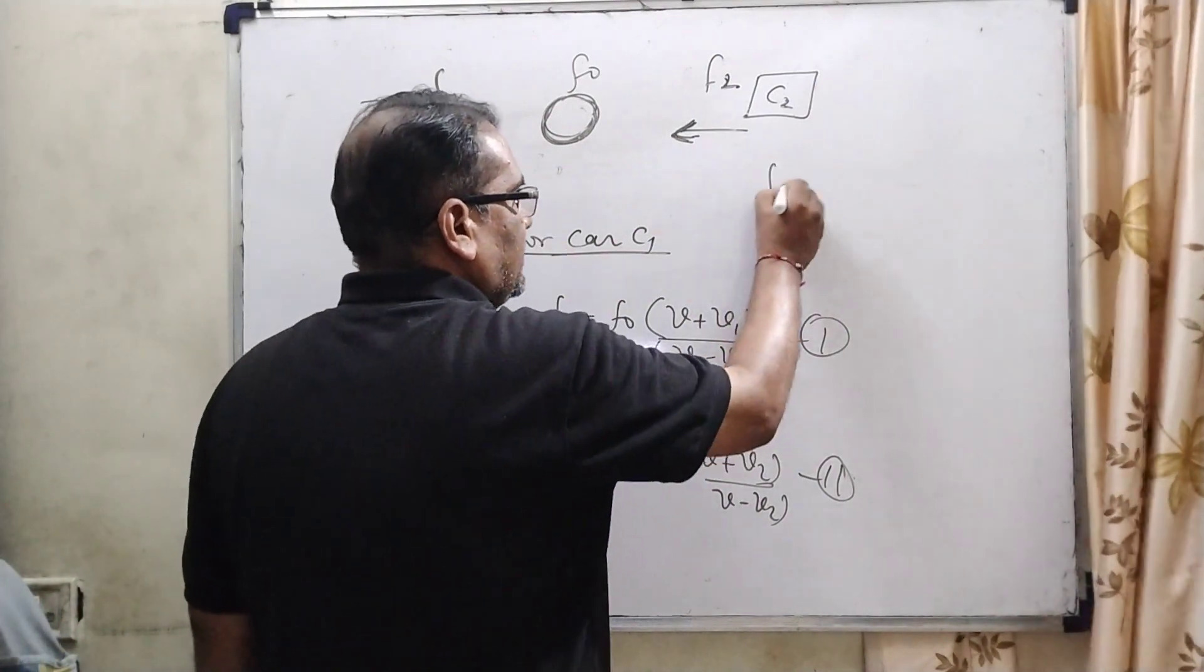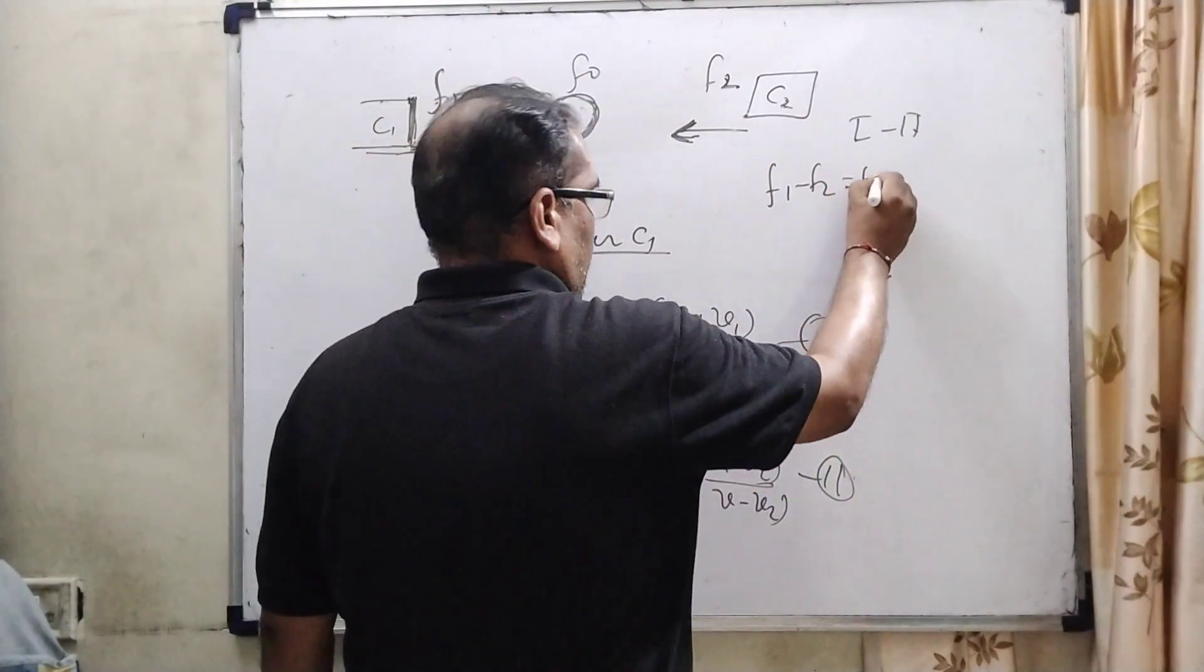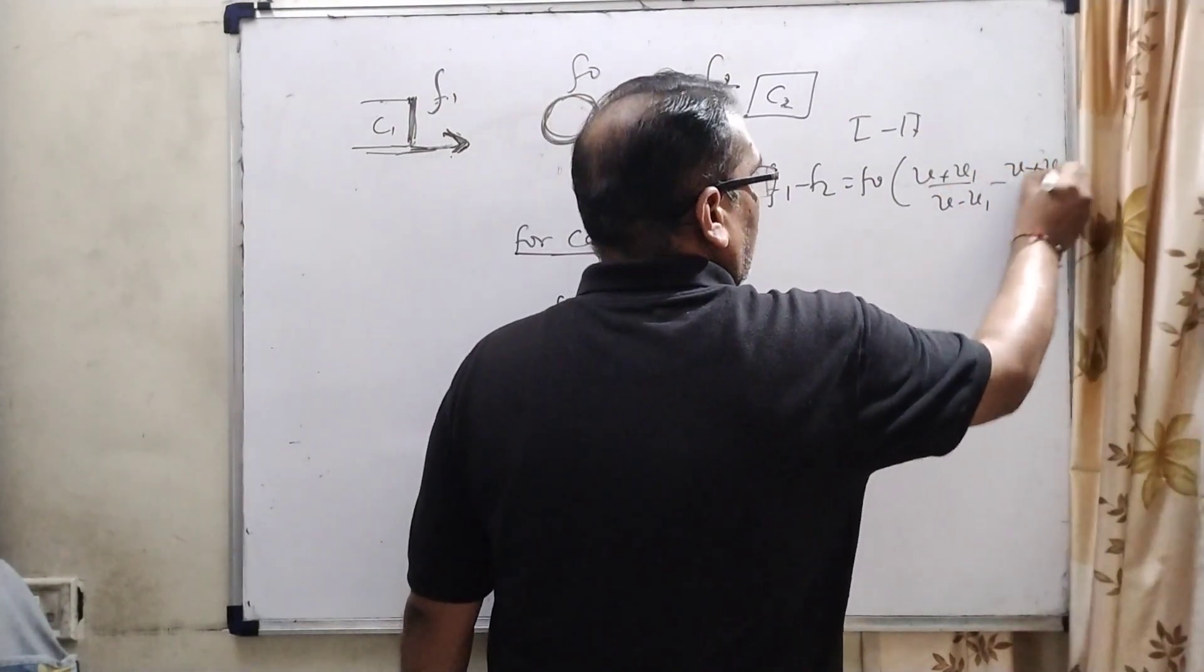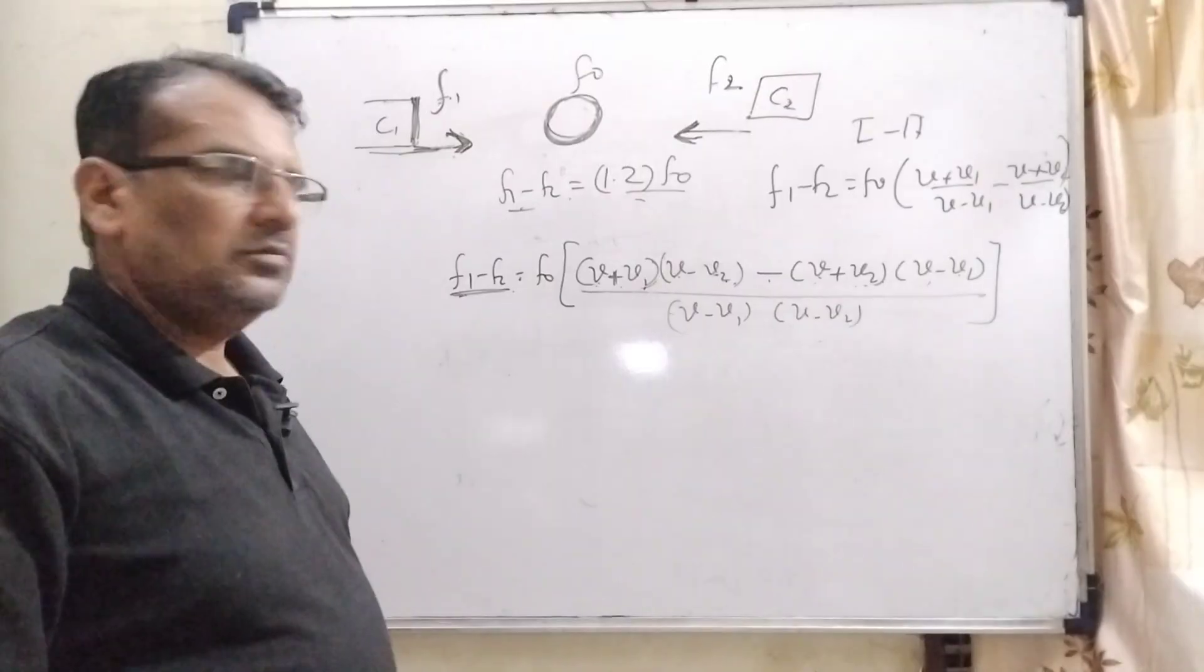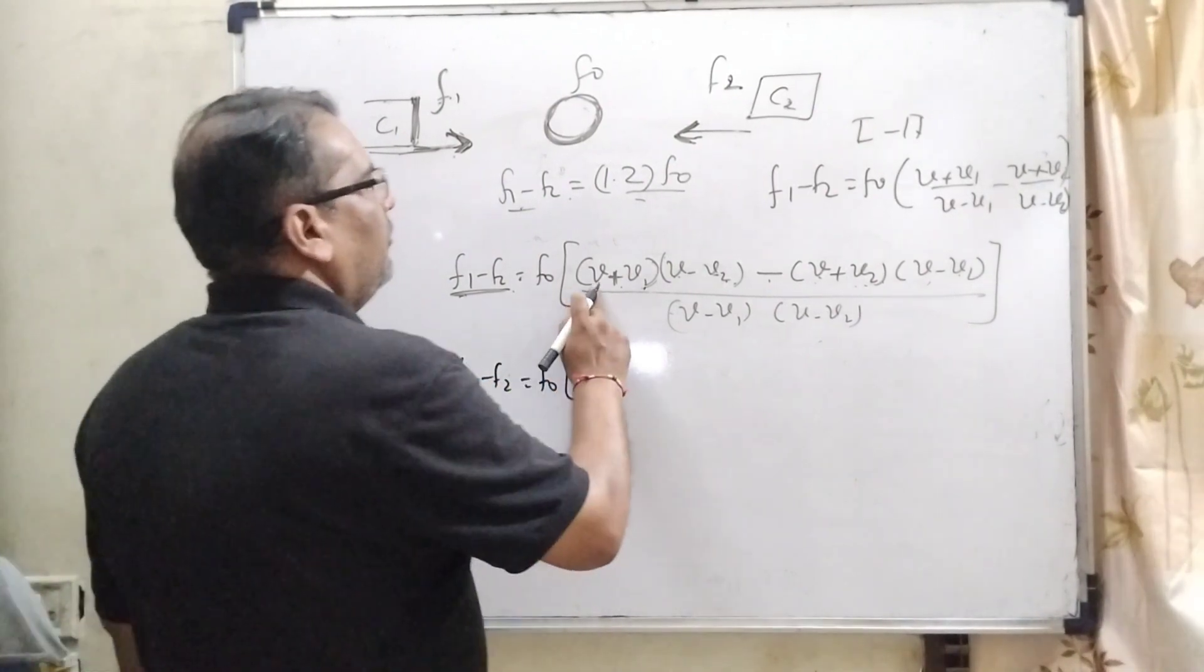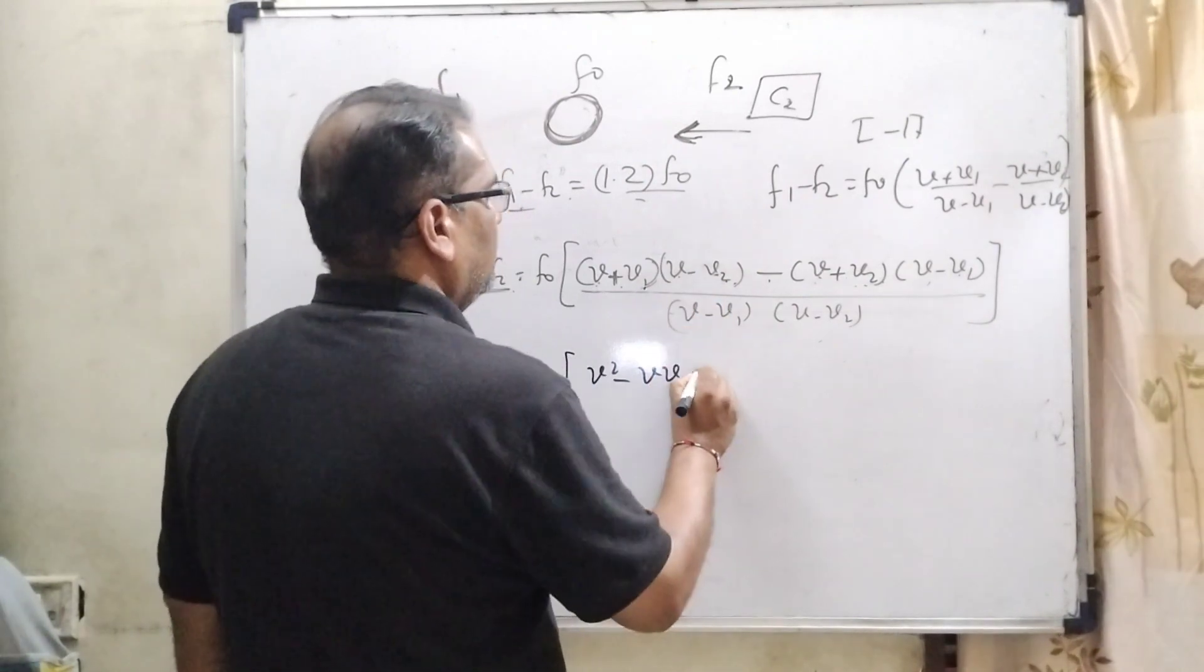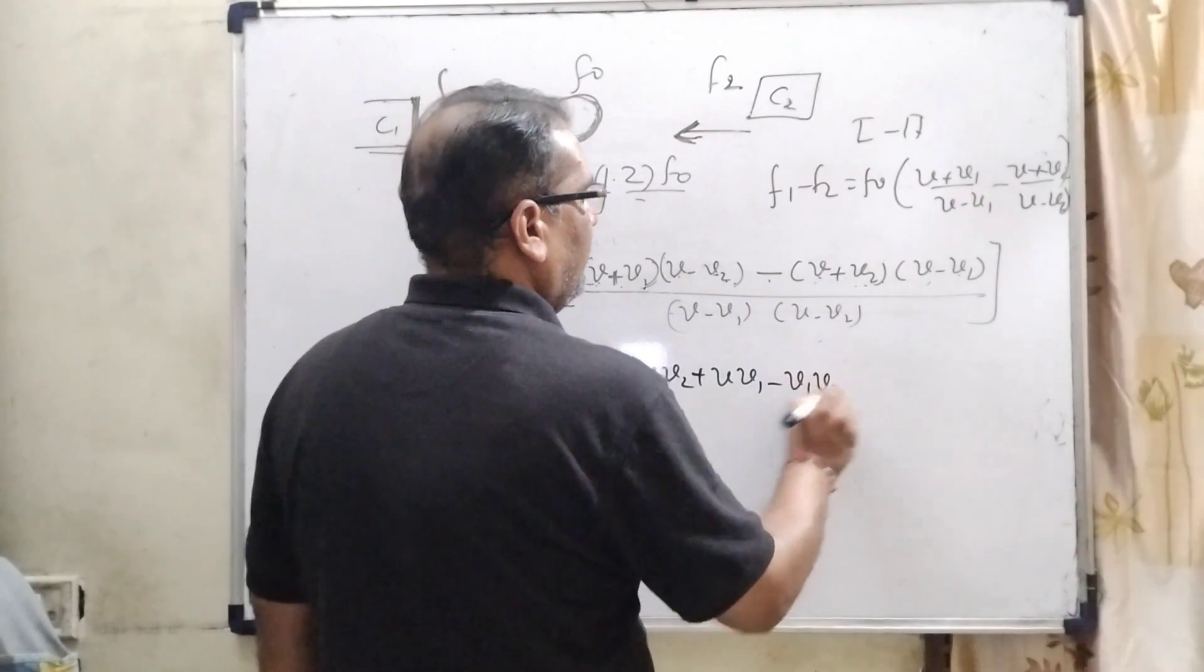Now, the difference between the two frequencies is F1 minus F2 means first minus second. Then F0 gets common: (V plus V1) upon (V minus V1) minus (V plus V2) upon (V minus V2). Now, F1 minus F2 equal to F0 times V square V into V2 minus V times V2, V1 and V, V1 and V2 that is minus V1 V2.